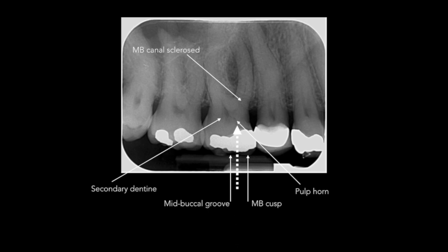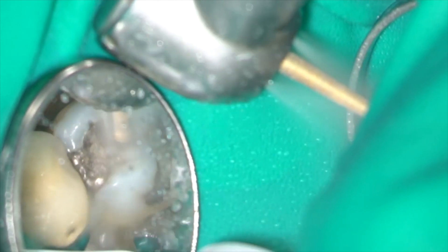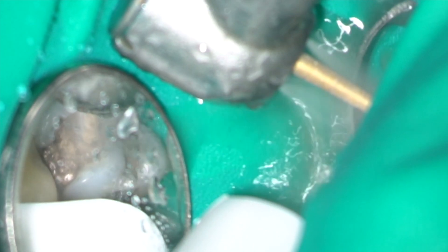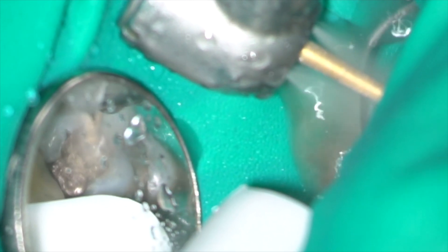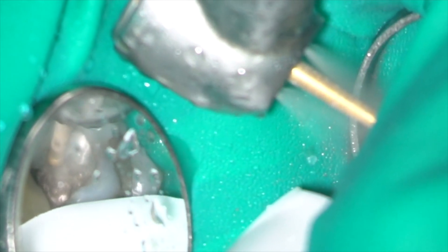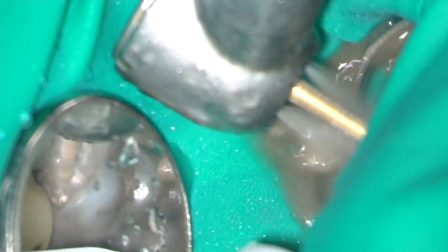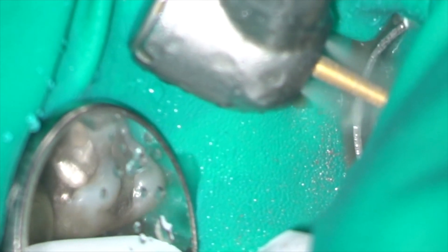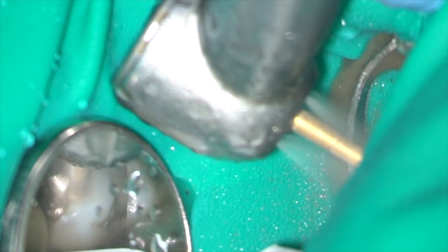In this case I'm going to use a point between the mesial buccal cusp tip and the mid buccal groove. Of course there's another way to make things a lot easier and that's to remove the entire restoration, and that's exactly what I did in the first molar. So here I am removing the amalgam restoration with a diamond burr.